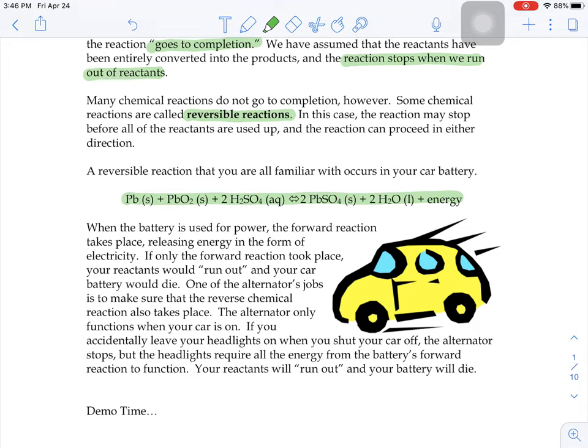Your battery in your car is used for power, and the forward reaction takes place releasing that energy in the form of electricity. If only the forward reaction would take place, your reactants would run out and your car battery would die. This isn't really convenient to have your car battery die on a regular basis. It's not just like swap them out for some double A's.